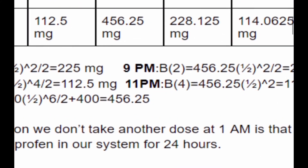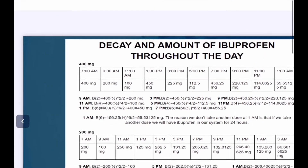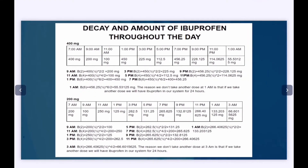We put that into our formula. At 9pm we have 456.25 times one-half to the power of 2 divided by 2 because it's been two hours since the 7pm dose, giving us 228.125 mg. At 11pm four hours has passed, so we put T equals four and get 114.0625 mg. At 1am another six hours has passed, however we don't take another dose. We have 456.25 times one-half to the power of 6 divided by 2, which equals 55.53125 mg. We don't take another dose at 1am because doing so would leave ibuprofen in the system for 24 hours.